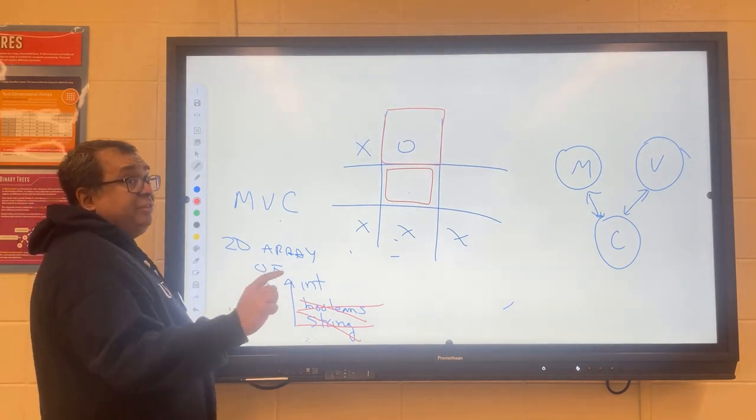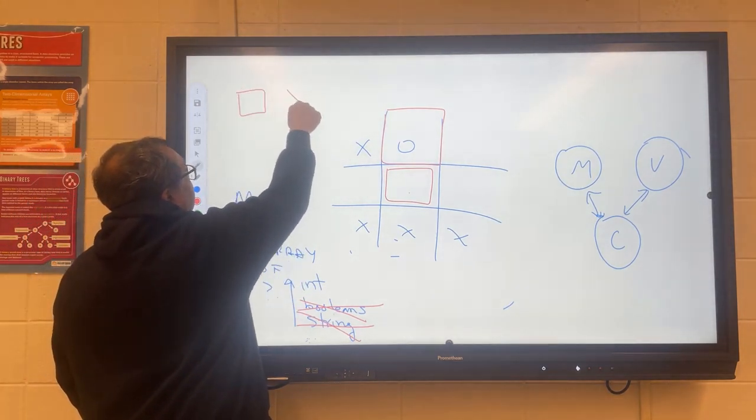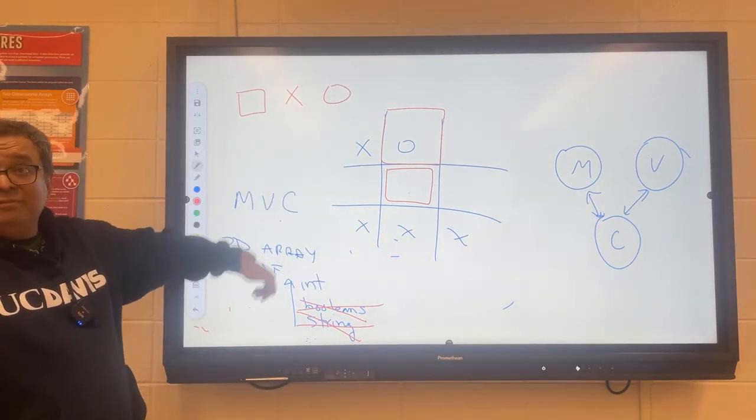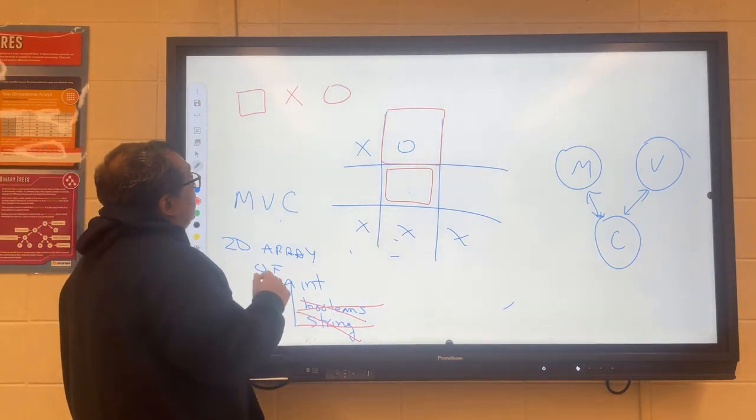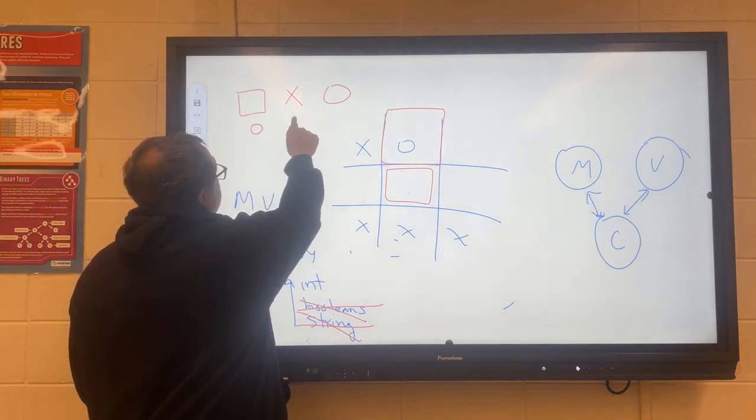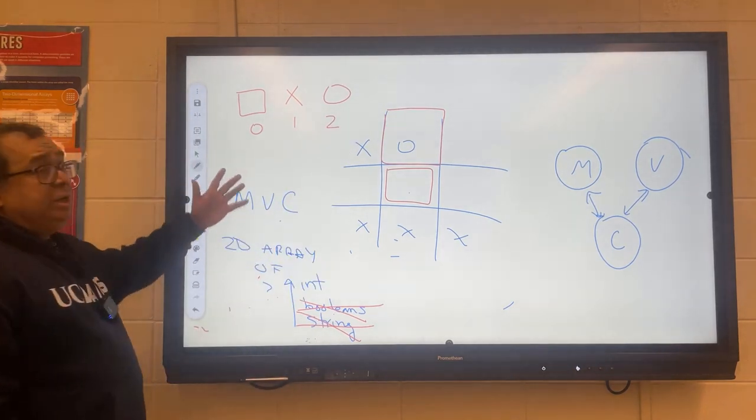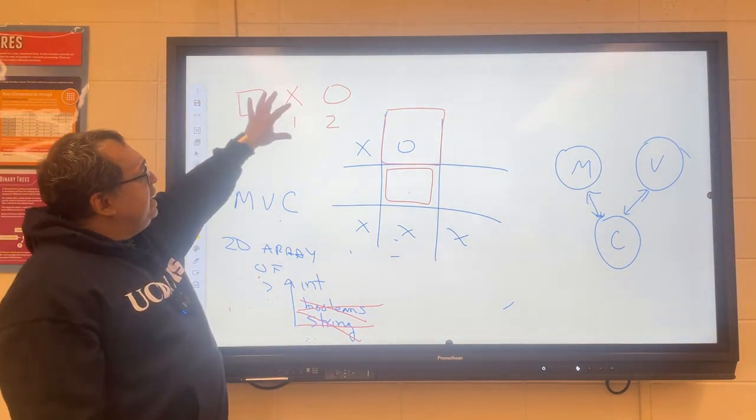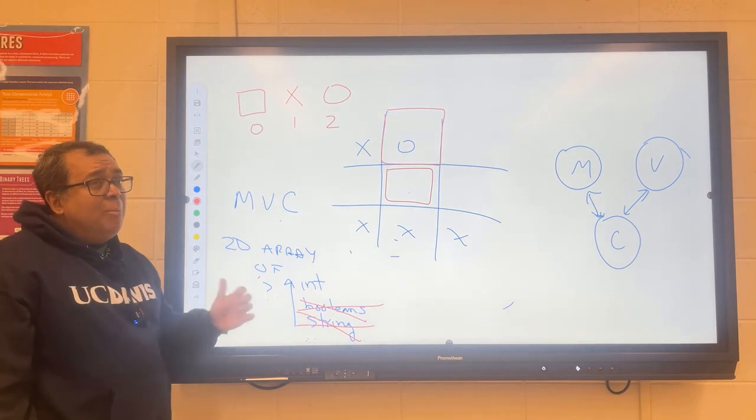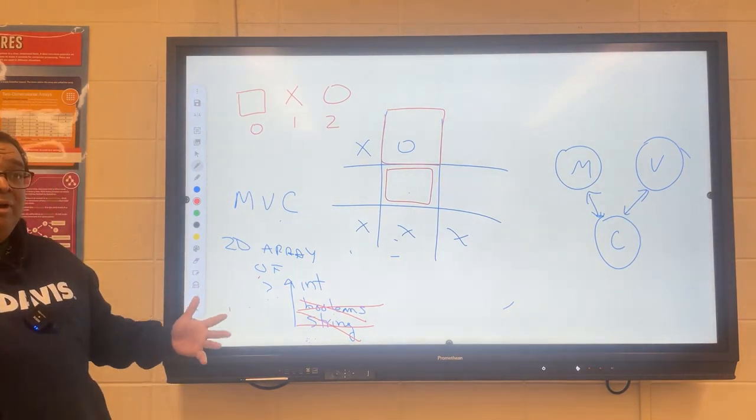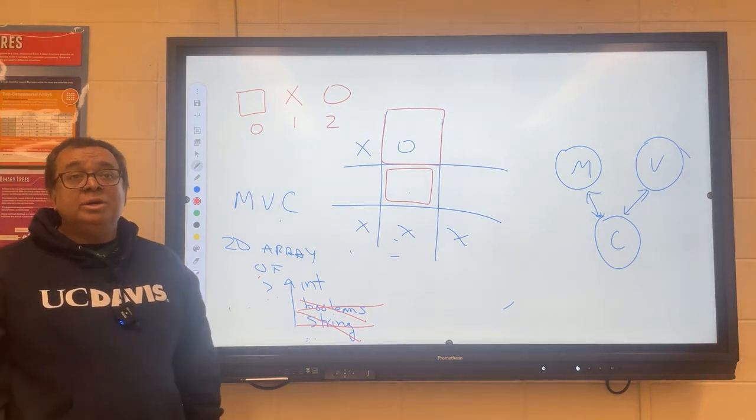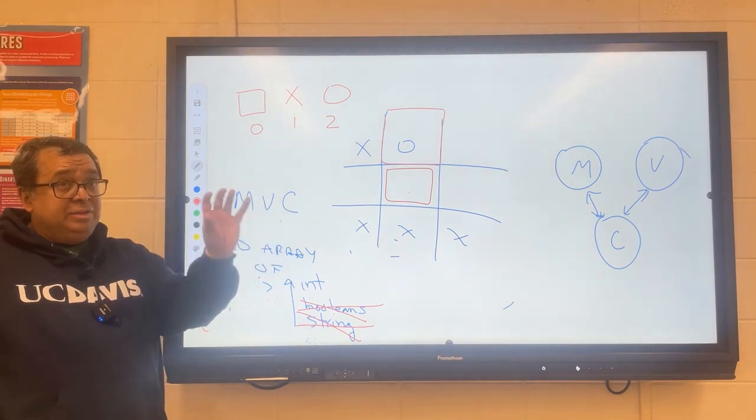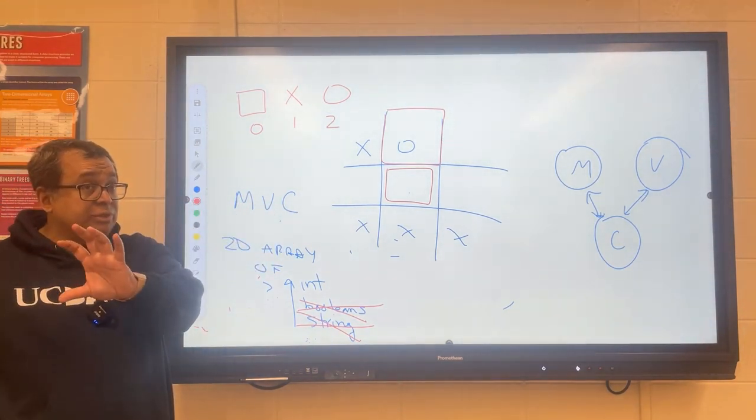There's a much better alternative. Can anyone guess what that is? Ints. We want to use ints. Even though we like this nice layout with buttons and strings, internally the computer doesn't want to deal with that. It wants to use integers. Let's talk about what integers we should use. We have three states: empty, X, and O. Let's say I go with 0, 1, and 2.